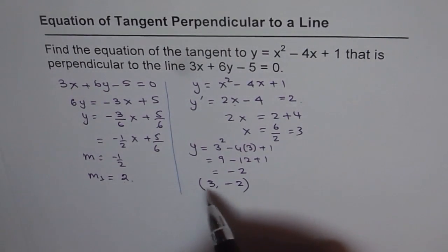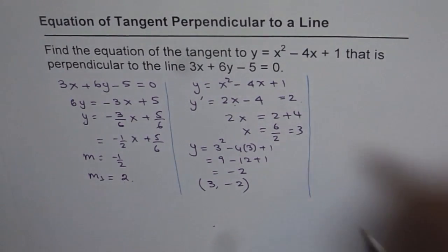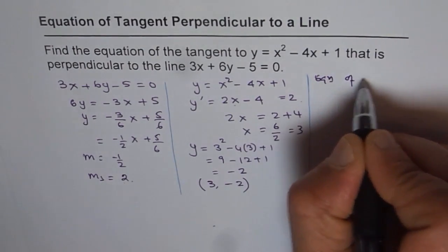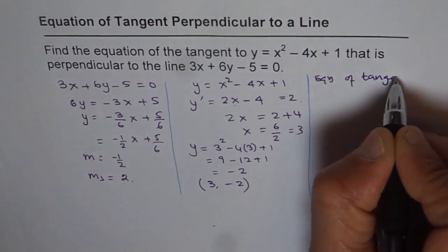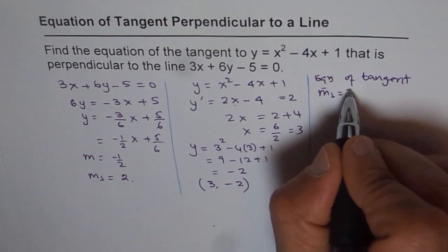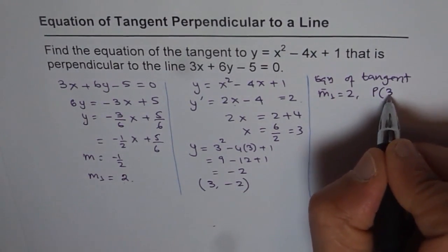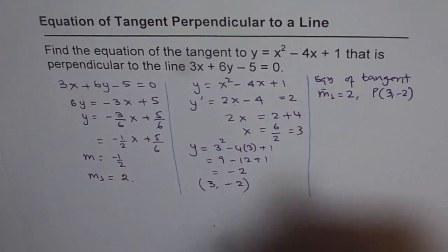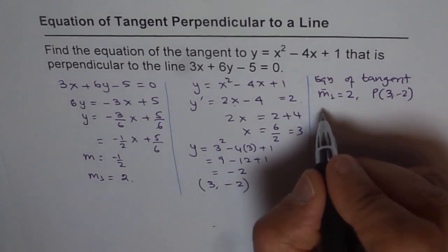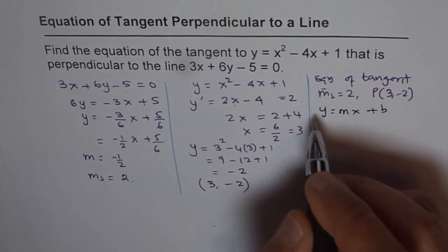So now we know the slope and the point. So what we need to find is the equation of the tangent. Let's figure out what is the equation of tangent. For slope m = 2 and the point is (3, -2). Now for that we can use the standard formula which is y = mx + b. Now in this, y is -2,